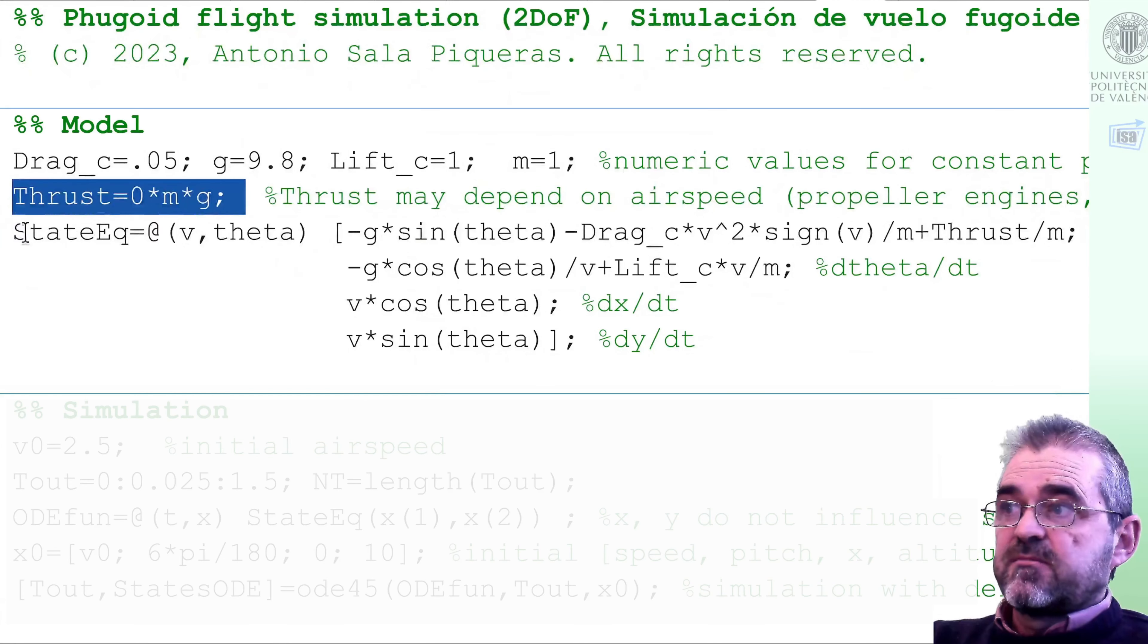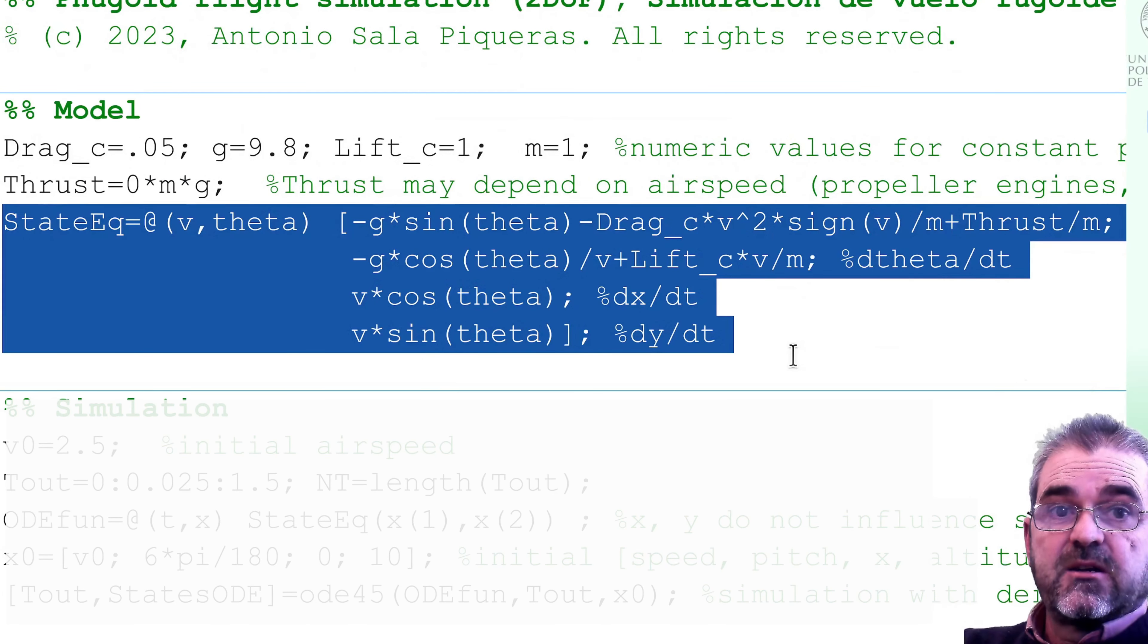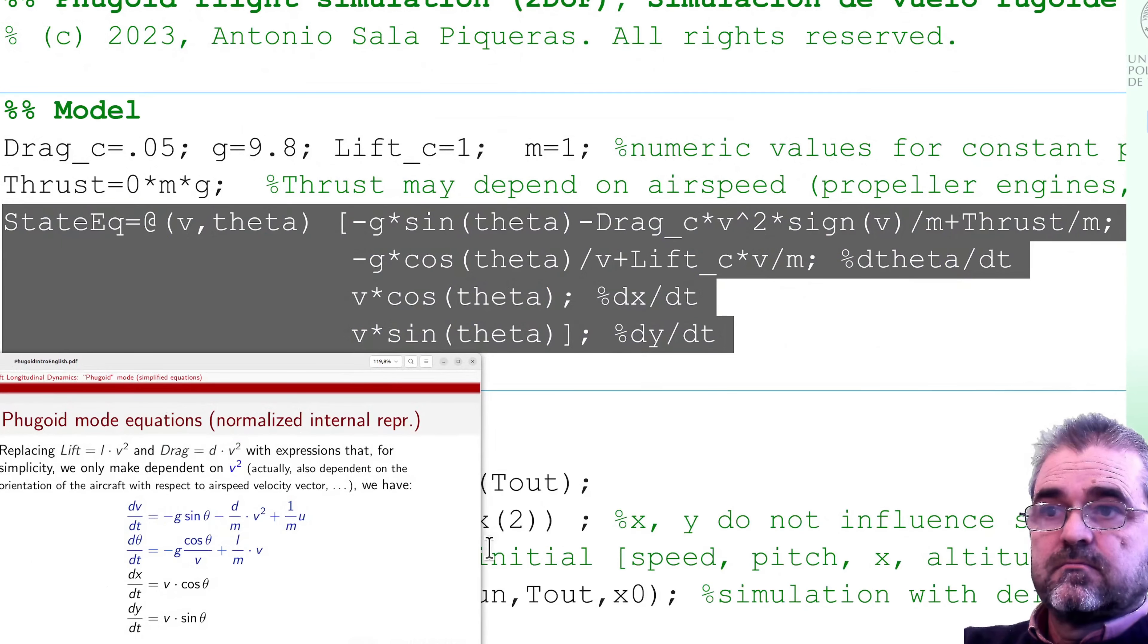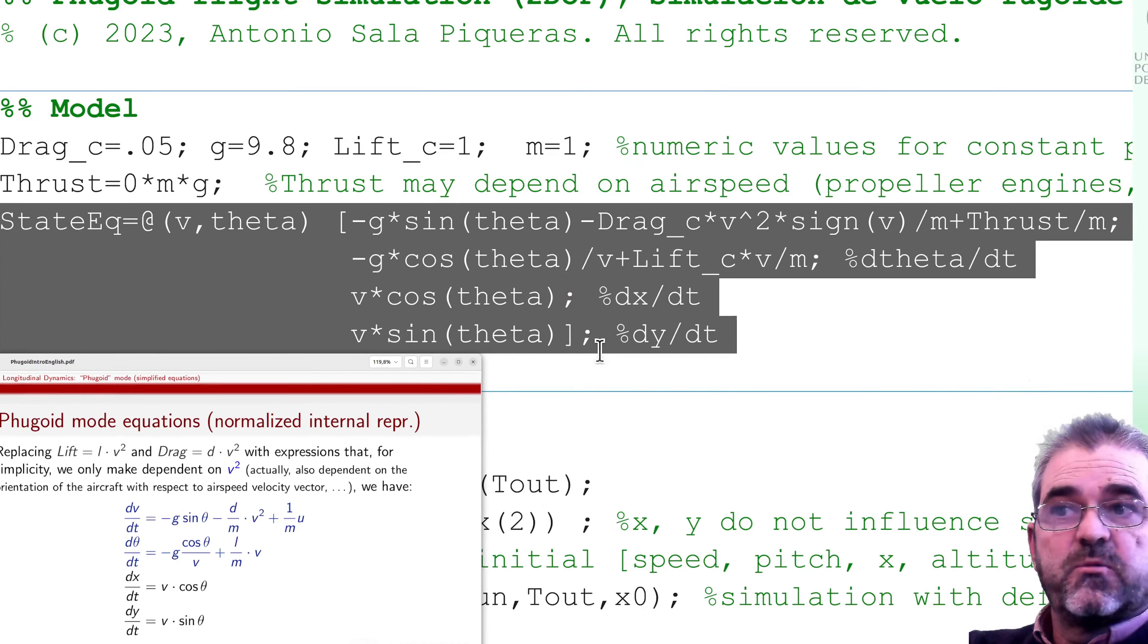So the thing is that introducing the model is basically copying the equations to MATLAB in this way. If we copy line by line the four equations, we get the code we have highlighted in the MATLAB window. As everything in the right-hand side of the four equalities depends only on v and theta, these are the two arguments of this state equation function I defined in MATLAB. So, we have finished with the model.